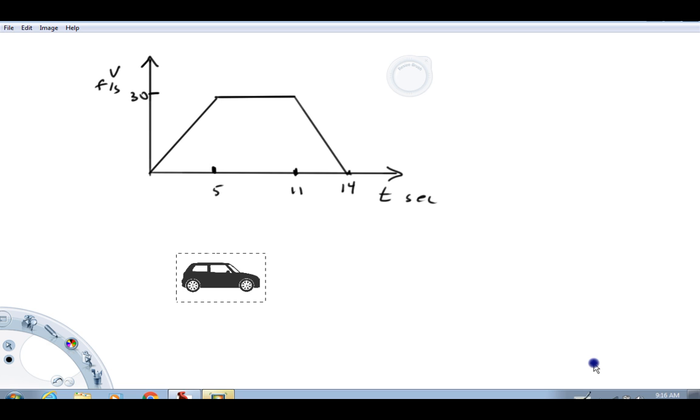What we're looking at here is a velocity graph that describes the motion of this vehicle. The vehicle starts from rest because at t equals zero the velocity is zero. It accelerates to 30 feet per second over a five-second interval. From t equals 5 to t equals 11 seconds, the car travels at a constant velocity of 30 feet per second. Then the driver applies the brakes and brings the car to rest over a three-second interval from 11 to 14 seconds.